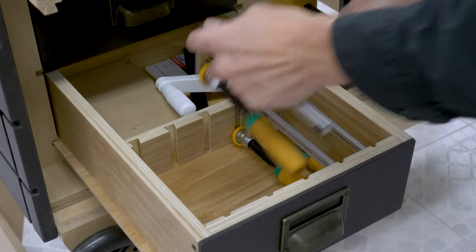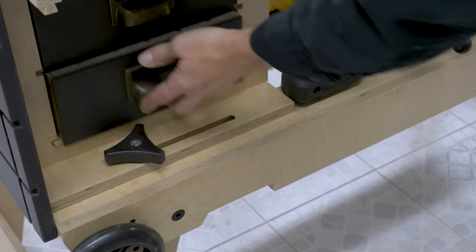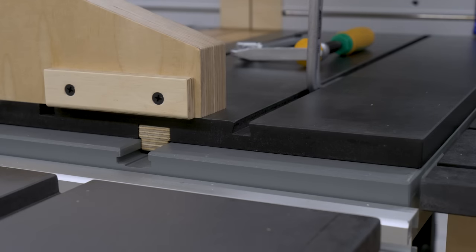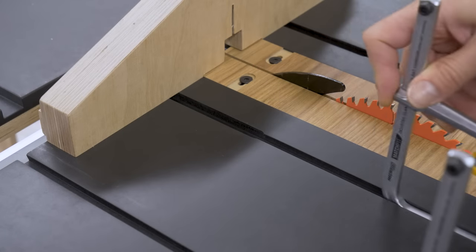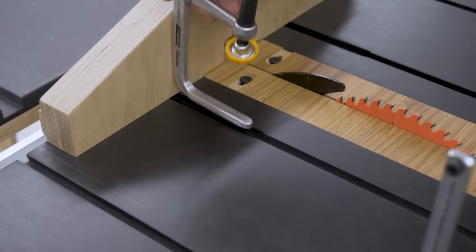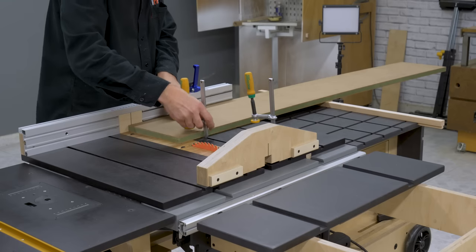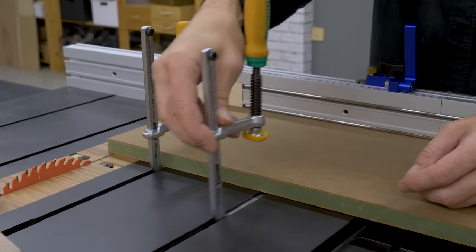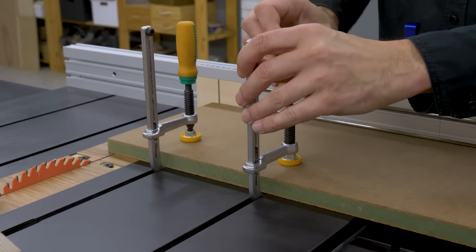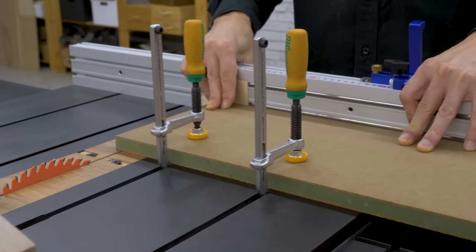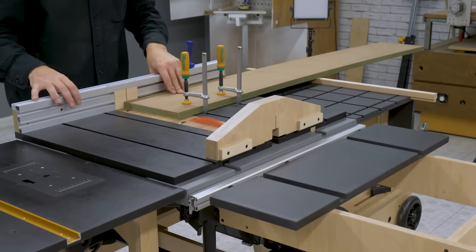I can also use the assembly table's dovetail clamps in this sled. They'll be very helpful in order to cut large work pieces safely, or work pieces with irregular shapes.